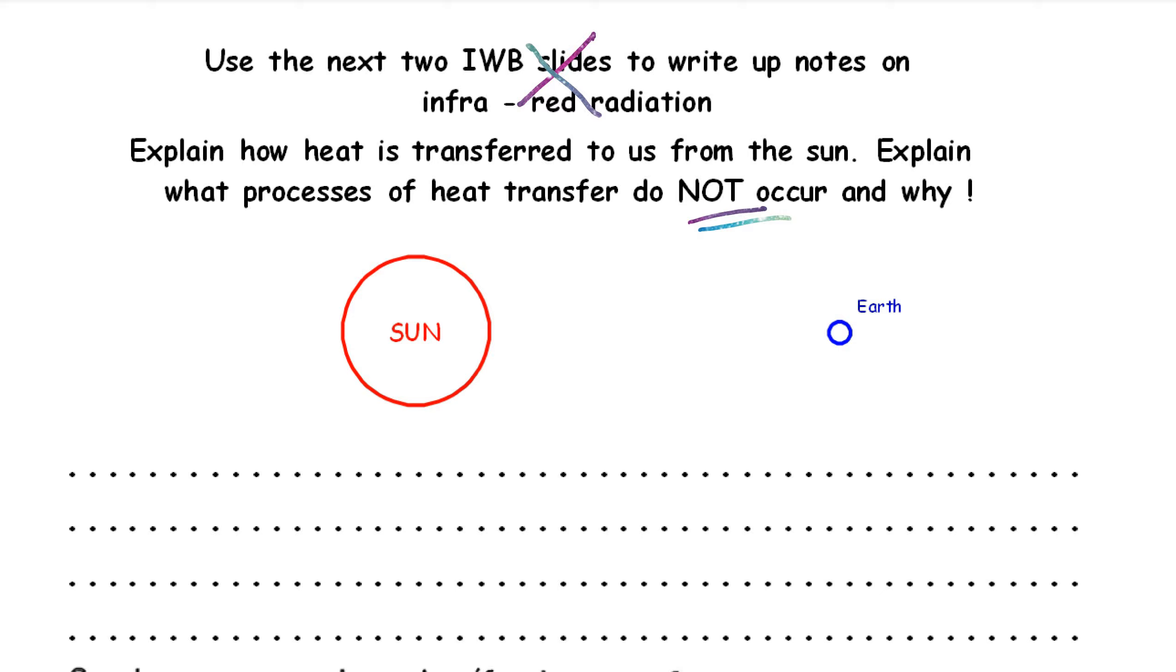Well, the first thing is, we've got the sun, and about 150 million kilometres away, we've got the earth. In between us is space. Space is a vacuum, and it has no particles, no particles at all. That is the definition of a vacuum.